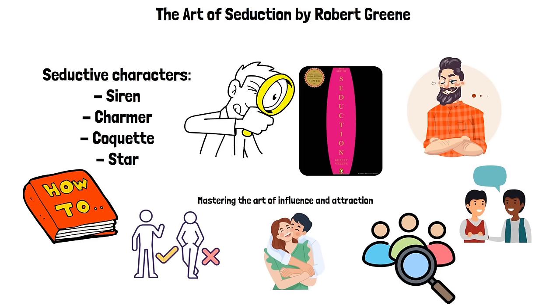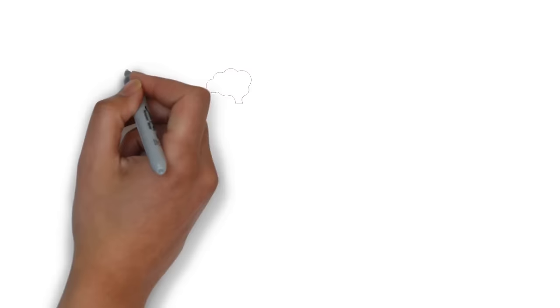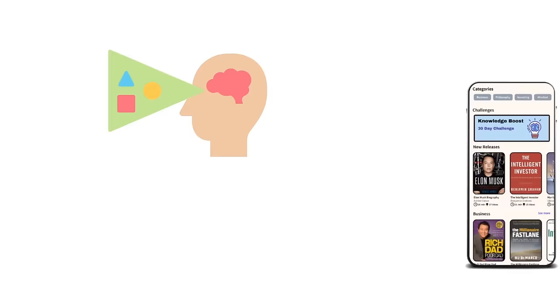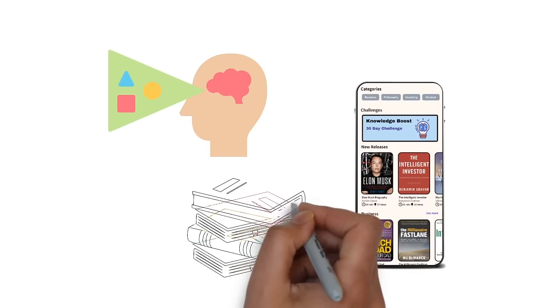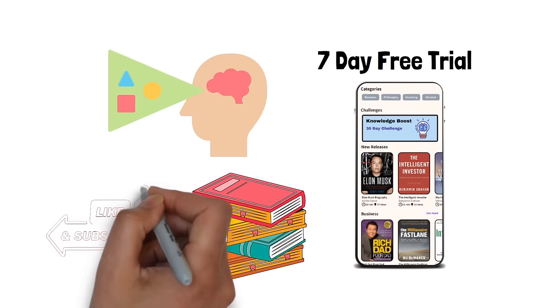We are going to analyze all the main ideas of the book in this animated book summary, so get ready to dive deep. Before we dive into the first idea, if you are a visual learner, you have to check our app, Morphosis. We have animated book summary videos for the best self-development and business books. Click the link in the description to get a seven-day free trial and learn from hundreds of animated book summaries. And don't forget to like this video and subscribe to our channel so you get notified when we upload free videos.